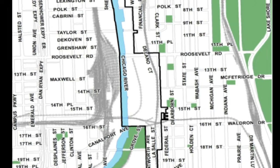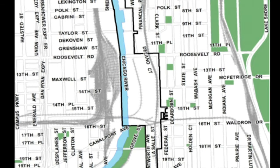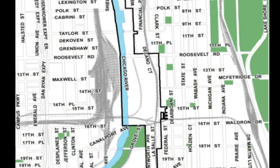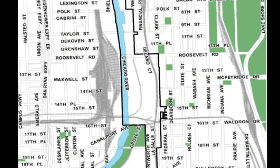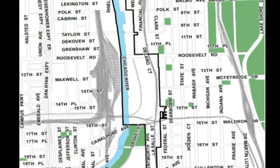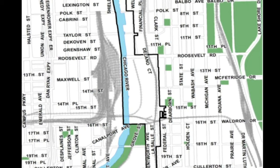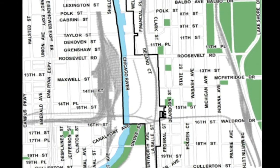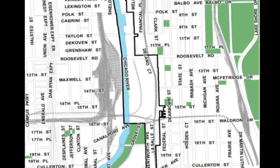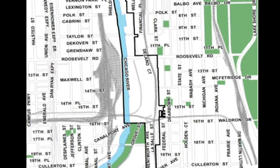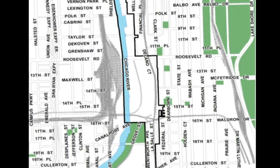The Roosevelt-Clark area encompasses 135 acres of largely vacant land in the city, generally bounded by Harrison Street to the north, the Chicago River to the west, Clark Street to the east, and Archer Avenue to the south in the near south side community.